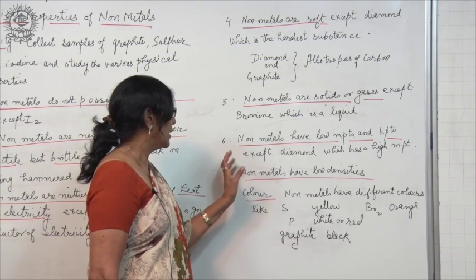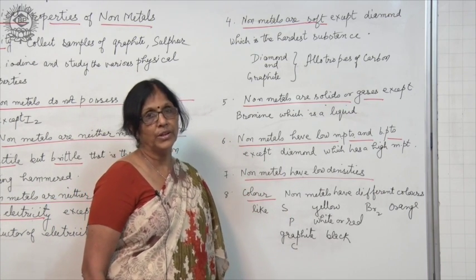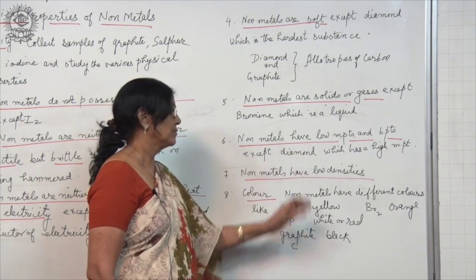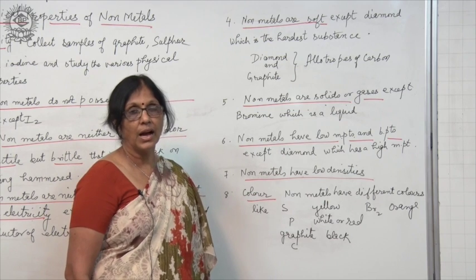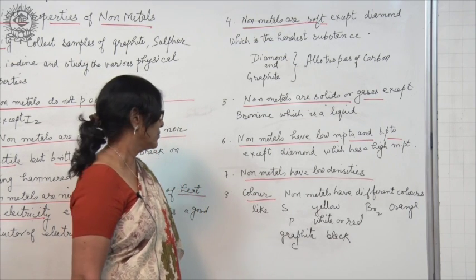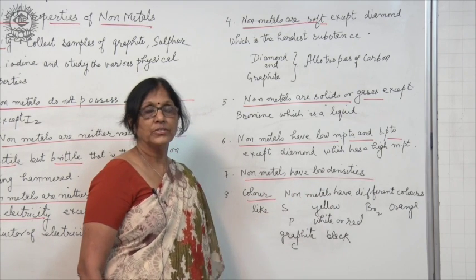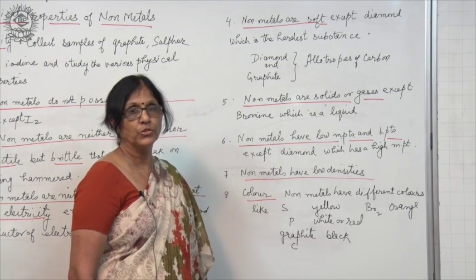Unlike metals, non-metals have low melting points and boiling points except diamond which has a high melting point. Also, non-metals have low densities, just opposite to metals.